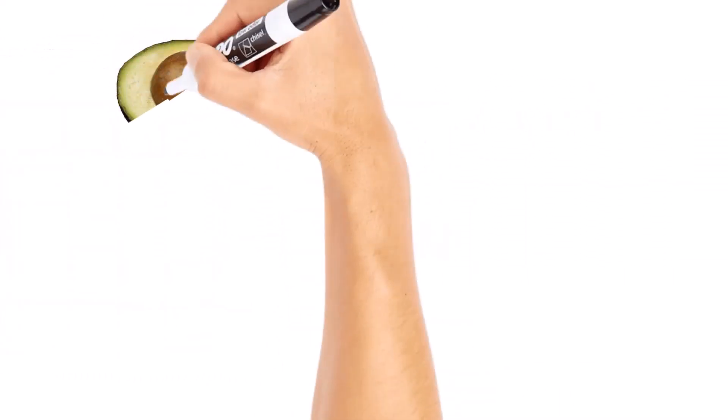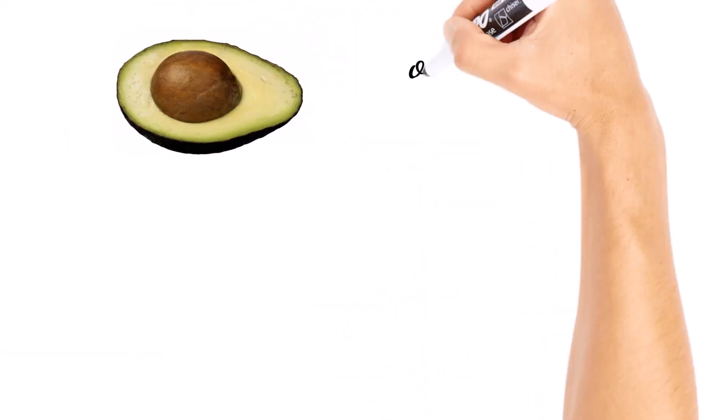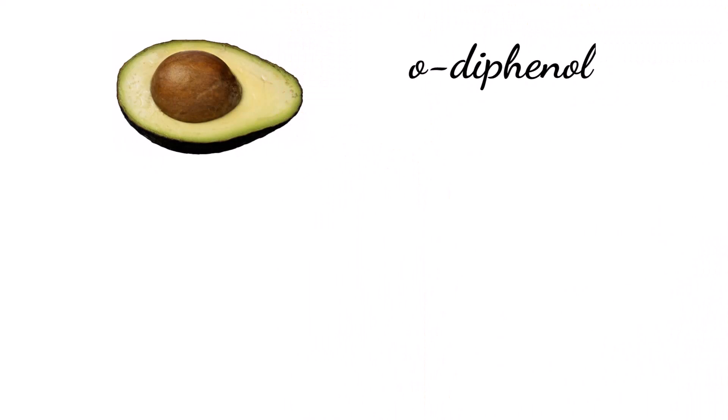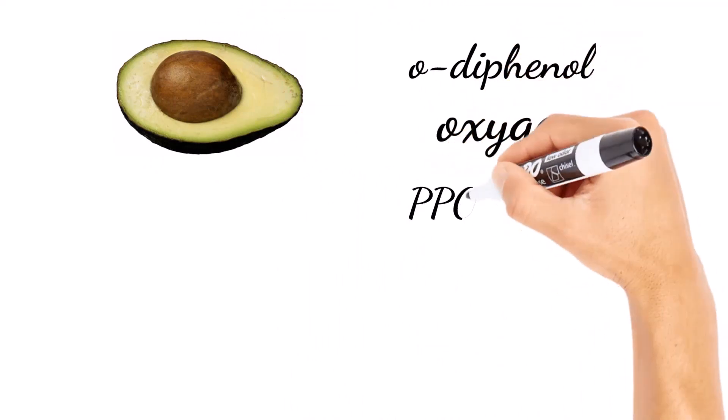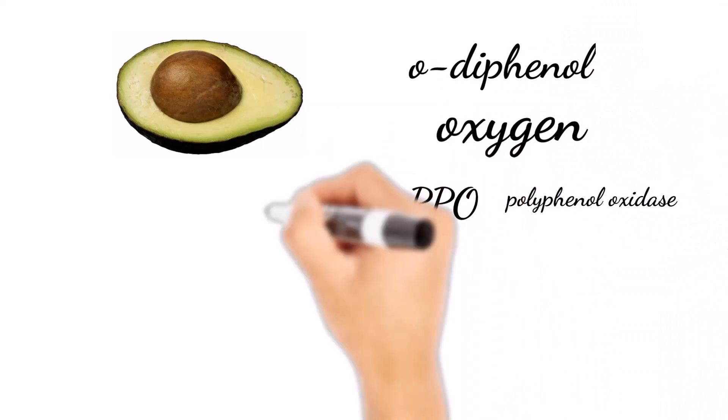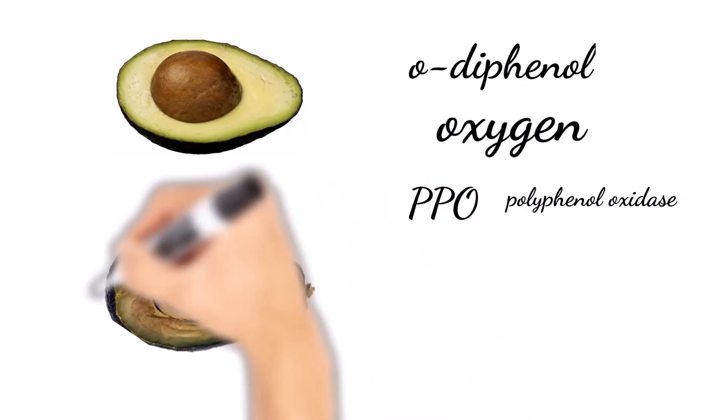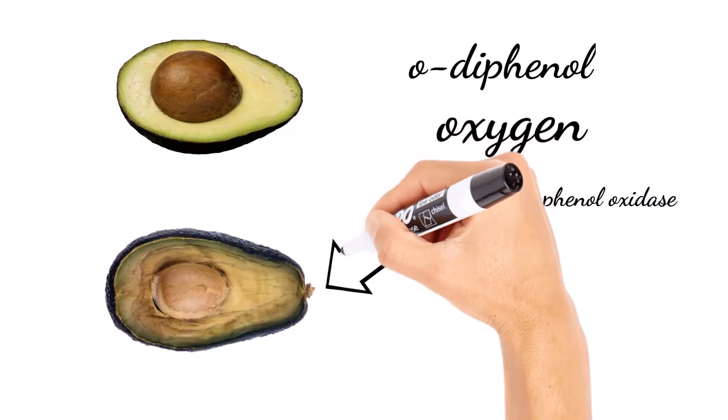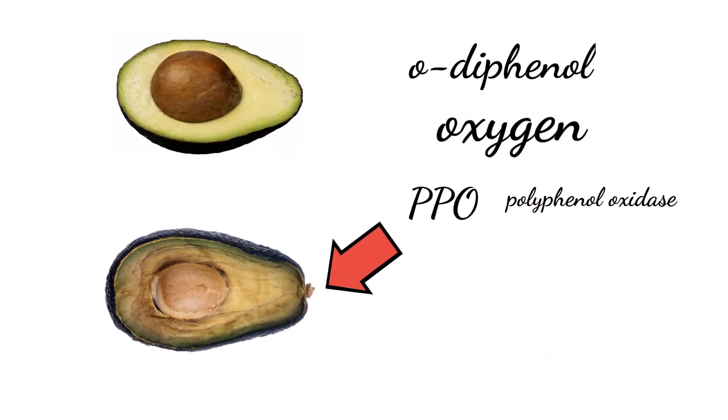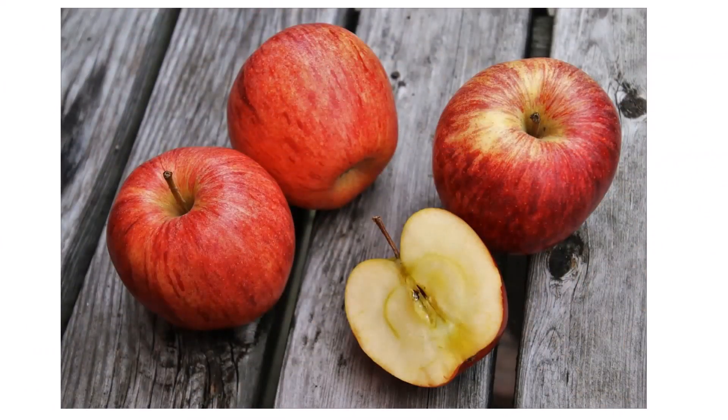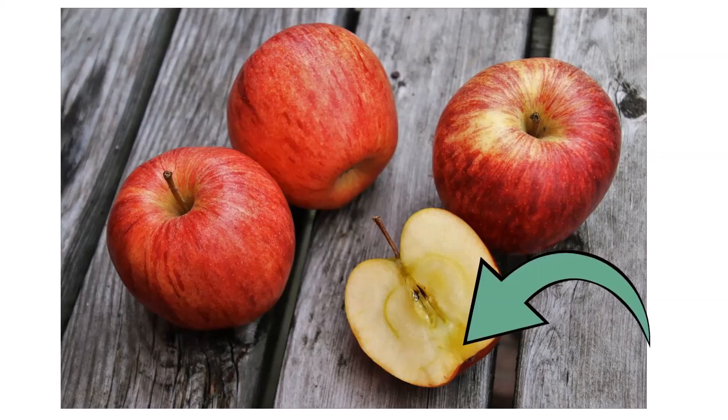When you cut into an avocado, there is a substance called O-diphenol that when exposed to air along with an enzyme called PPO, which stands for polyphenol oxidase, causes the avocados, and thus the guacamole, to turn brown. This browning is common in all plants, but is faster with avocados. If you cut an apple in half, thus exposing it to the air, you'll notice the same thing.